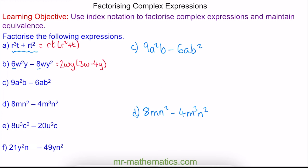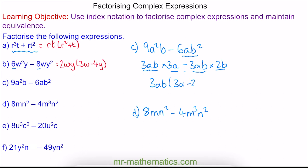For question C, we can see that 3ab is the common factor of both terms. We multiply the 3 by 3 to make the 9, and an a to make the a squared, and we have a b term. To make 6ab squared we have the common factor multiplied by 2b. So because 3ab is common, this goes on the outside, with 3a minus 2b on the inside.